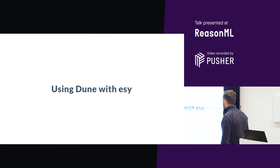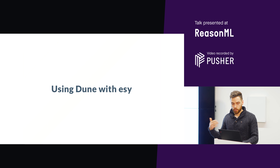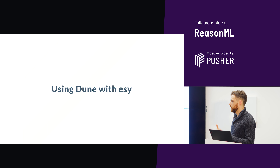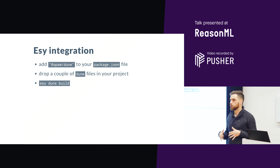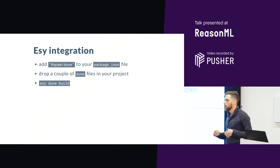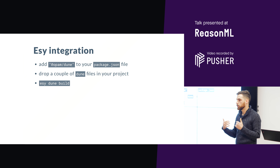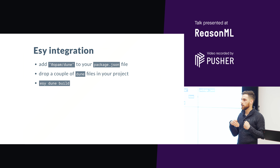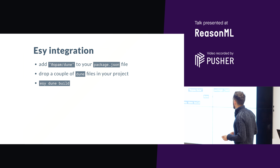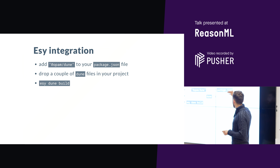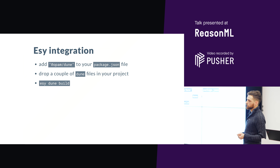A word about using Dune with Esy. If you've been using ReasonML, you're probably quite familiar with Esy, which is a tool for providing a good workflow to develop applications. Dune and Esy are quite independent, but there has been good communication between the two teams, and they work quite well together. If you develop an application with Dune and publish it, it will be really easy for someone using Esy to use your project as a dependency. You just add 'opam-dune' to your package.json, drop a couple of dune files in your project, call 'esy build', and it will just work.